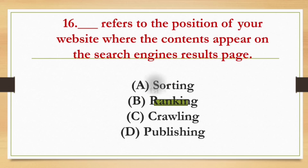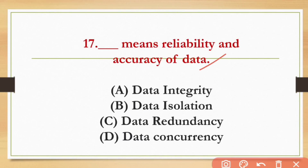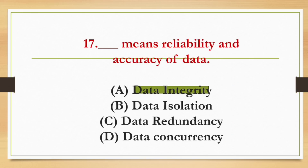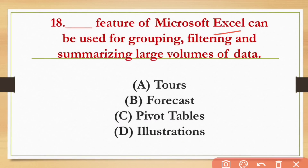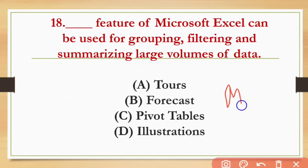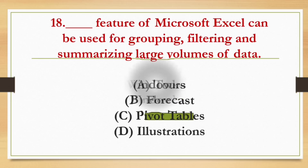The next question: which term means reliability and accuracy of data? The options are Data Integrity, Data Isolation, Data Redundancy, and Data Concurrency. The answer is Data Integrity, which means reliability and accuracy of data.